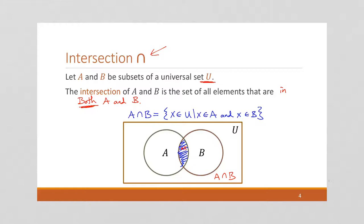And again, you're going to notice that this is synonymous to a Boolean AND. An element has to be in both A and in B for it to be in the intersection.